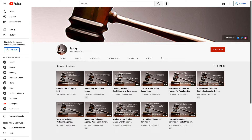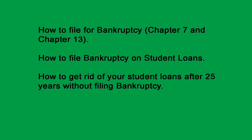This channel has instructional videos on how to file for bankruptcy, and how to file for bankruptcy on student loans. How to get rid of your student loans after 25 years without filing bankruptcy. There are over 1 million people over 60 years old who are still paying off their student loans. If you did this when you first got out of college or university, then when you turned 47 years old, your student loans could be gone. This law has been around since 1972.